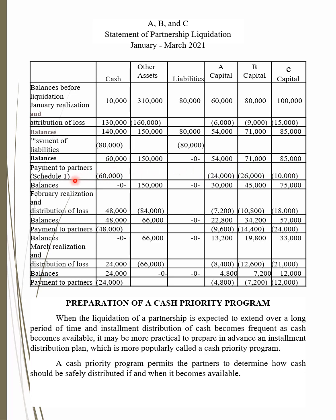After paying liabilities, the remaining $60,000 cash is distributed to partners. Based on Schedule 1, payments are: A capital — $24,000, B — $26,000, and C — $10,000. The balances after payment show other assets remaining at $150,000, and the corresponding capital balances for A, B, and C.